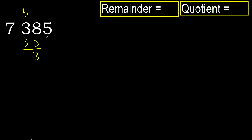Subtract. Next: 35. 7 multiplied by 5 is 35, which is not greater.